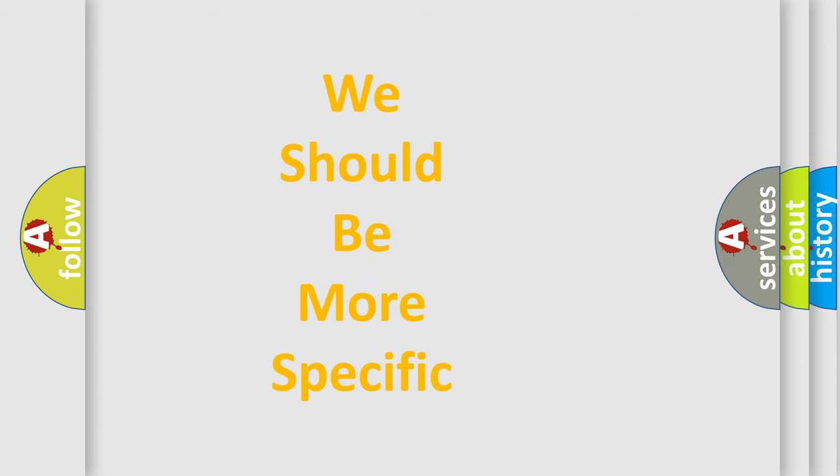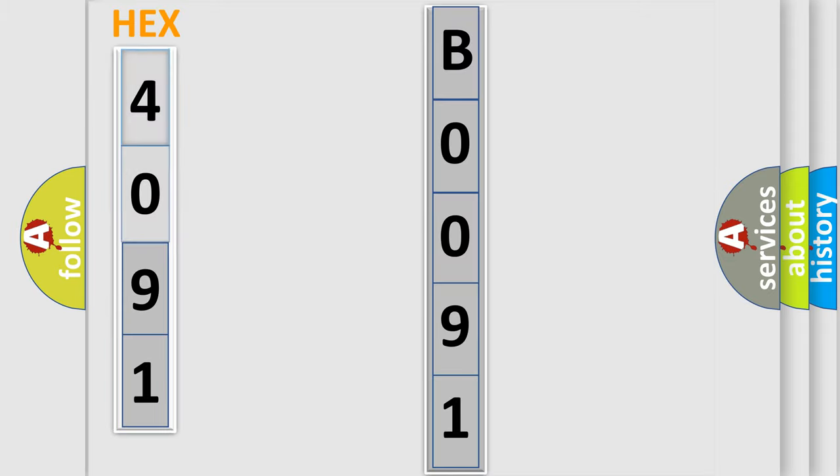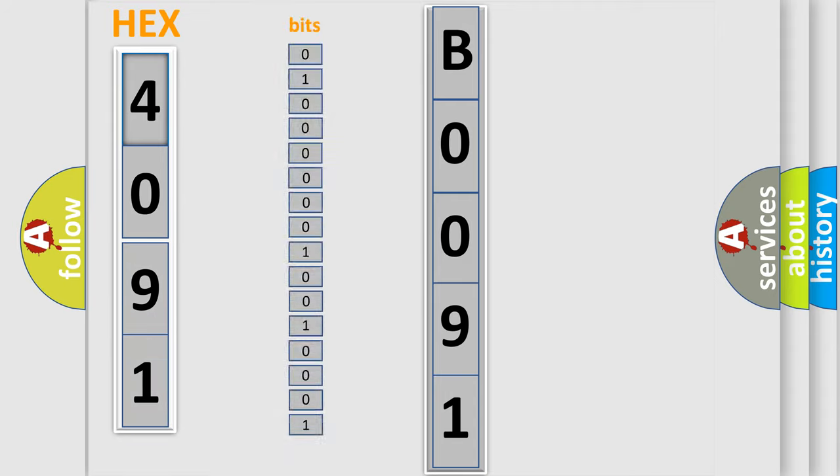The following demonstration will help you look into the world of software for car control units. You can move the video forward if needed. The error code is split into two bytes consisting of 16 bits. One bit is the basic unit that each computer works with. The bit has two logical states.